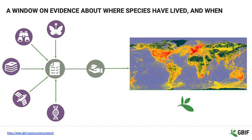One way to look at GBIF is as a window on the huge amount of evidence accumulated over centuries about where species have lived and when they lived there. The evidence takes many different forms, and often starts out scattered, isolated, and inaccessible. Specimens — literally billions of them collected from around the world, along with the labels that describe them — contain vital evidence which may be literally locked away in the drawers of natural history collections. Observations from surveys and monitoring programmes, as well as the increasing activities of citizen scientists, are recorded and stored in varying formats.